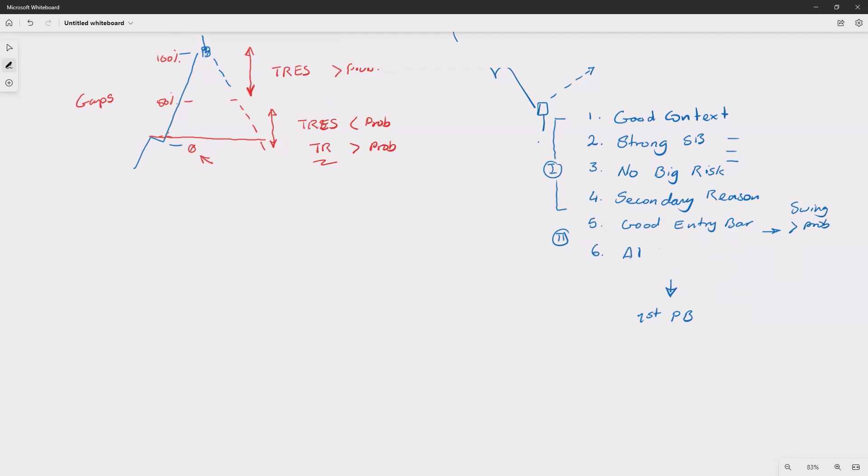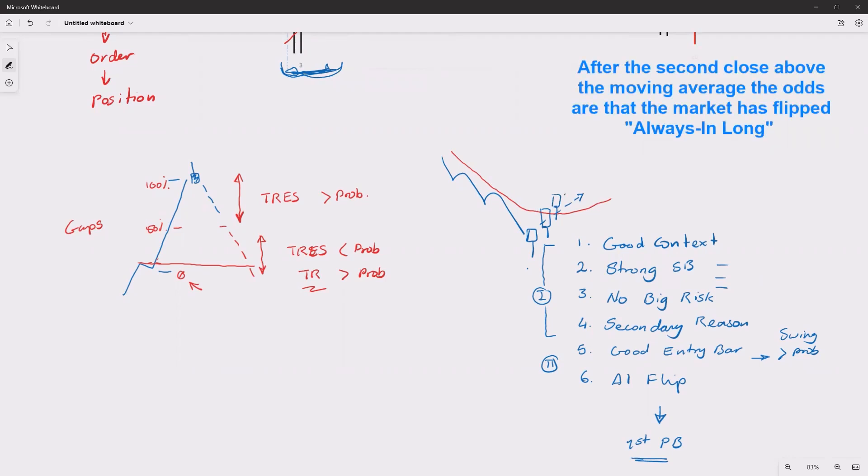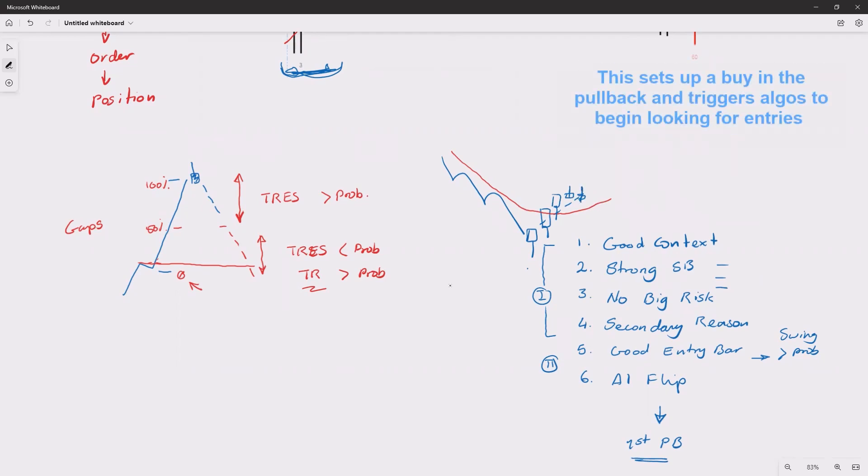And then this first pullback is very, very high probability. So this is equal to saying what happened after this bar was we got our entry bar, and let's say this was the moving average, and the moving average turned because of this reversal. So now we have our second close above the moving average. Now it is always-in long, probably. And then we are looking for a pullback to buy, and then all the algorithms for buying in the pullbacks starts to trigger.